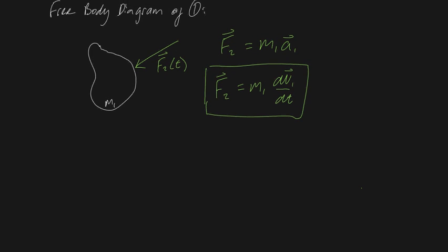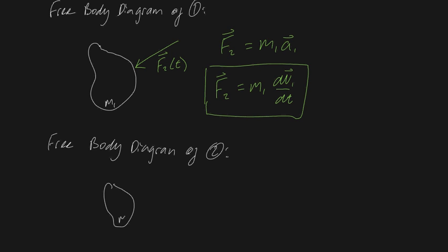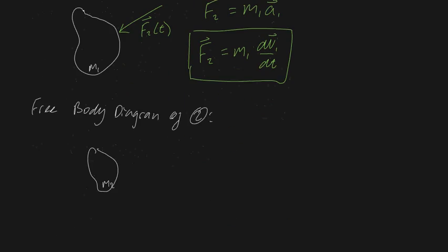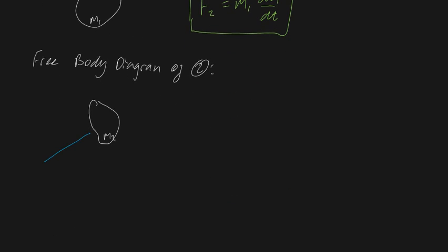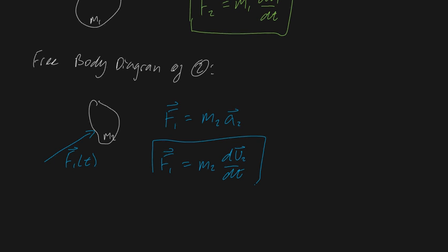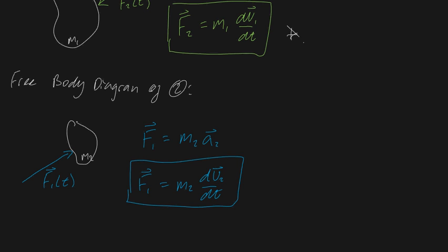Now let's consider the free body diagram of the second object of mass m2. There's one force acting on it — that's the blue force 1, which is a function of time. Applying Newton's second law again, the sum of forces equals mass times acceleration, meaning force 1 is equal to m2 times dv2/dt. So we've got two formulas but no way to equate them yet — they've all got different terms.